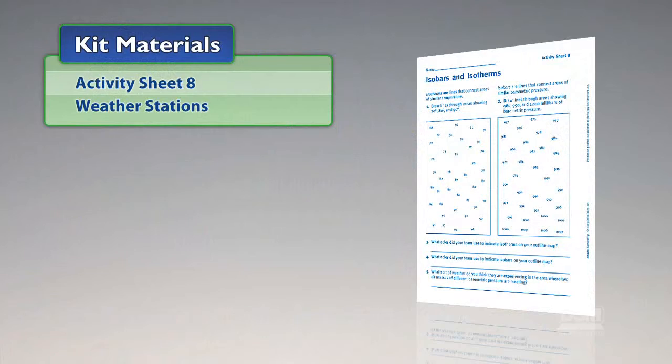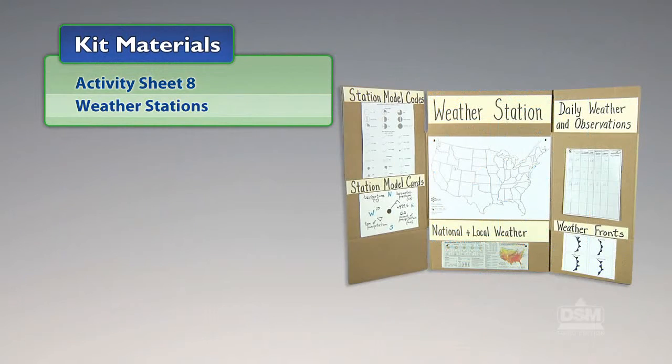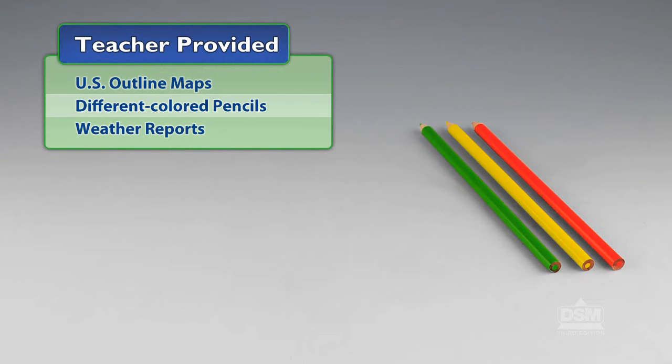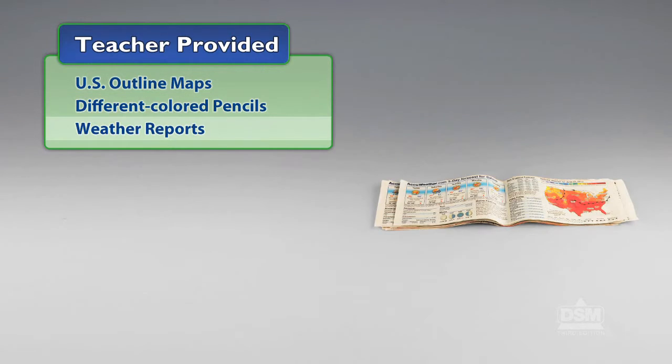You will need the following materials from the kit: Activity Sheet 8 and weather stations. You will also need to provide U.S. outline maps and weather stations from Activity 1, different colored pencils, and weather reports.